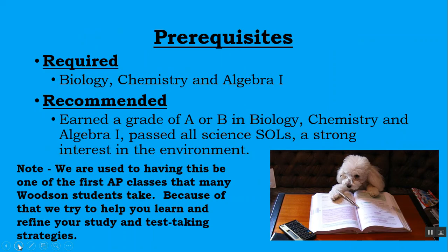Some required prerequisites for AP Environmental Science include having taken biology, chemistry, and algebra 1. In our experience, the most successful environmental science students have earned a grade of an A or B in biology, chemistry, and algebra 1. They have passed all their science SOLs and they have a strong interest in the environment.